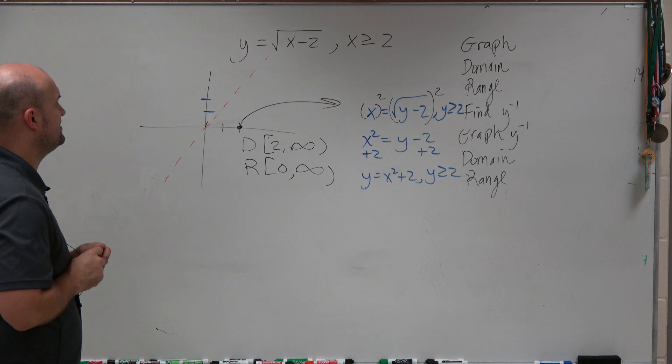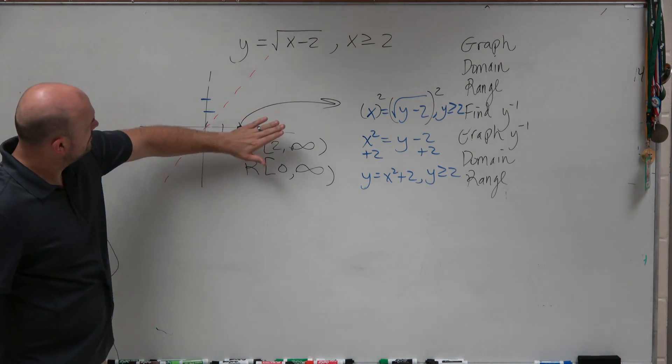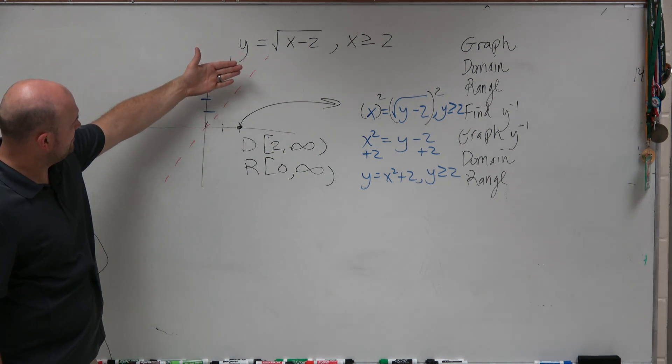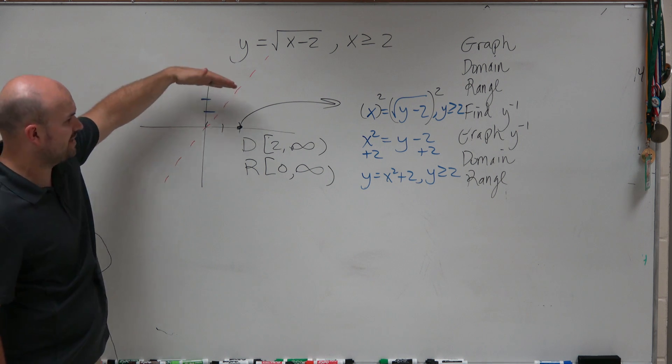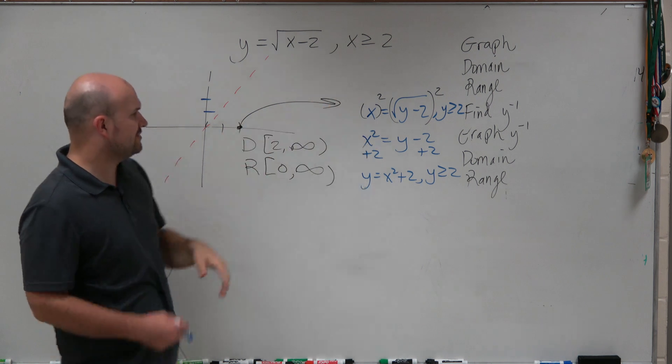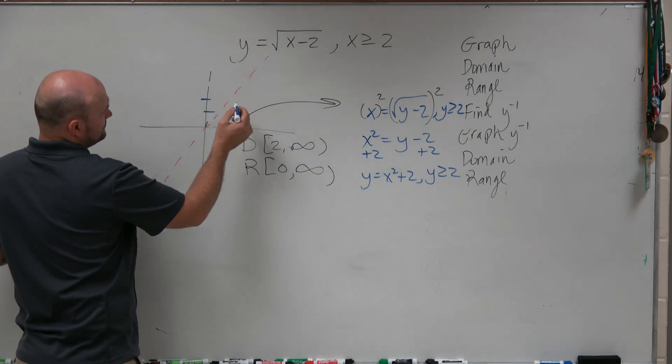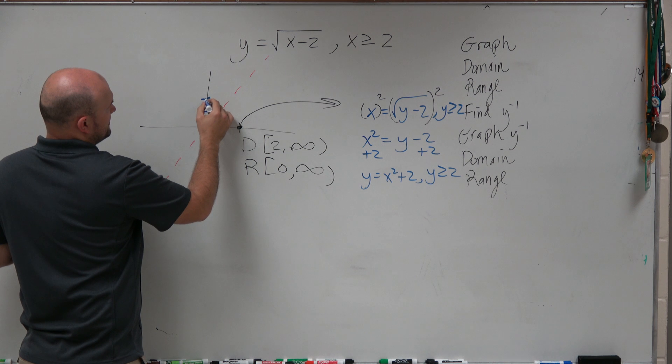So your constraint is still only going to be the positive form of this. It's only going to be when x is positive. The constraint is when y is greater than or equal to 2. It's only going to be the positive form of that. So it's going to look something like this.